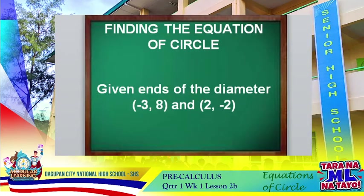We have here: finding the equation of a circle given the ends of a diameter, which has the coordinates negative 3, 8 and 2, negative 2.